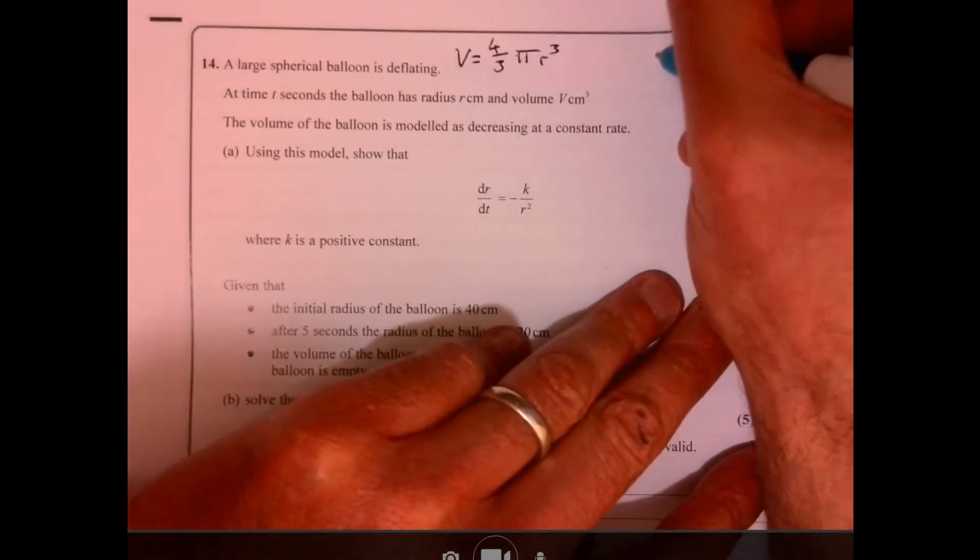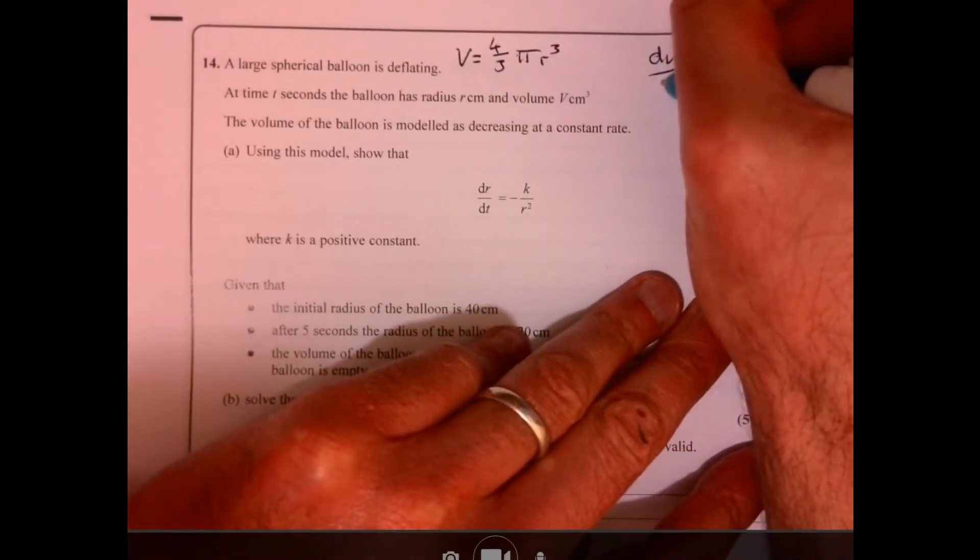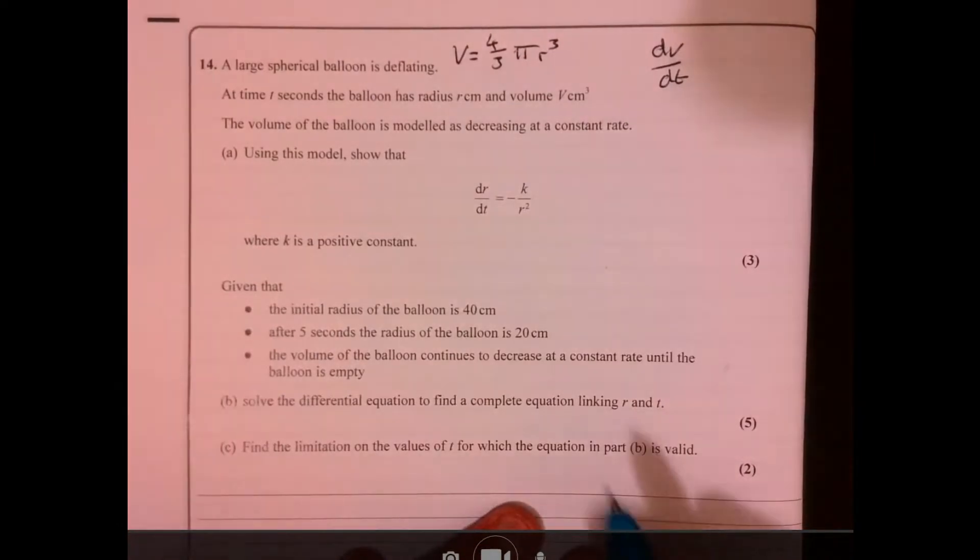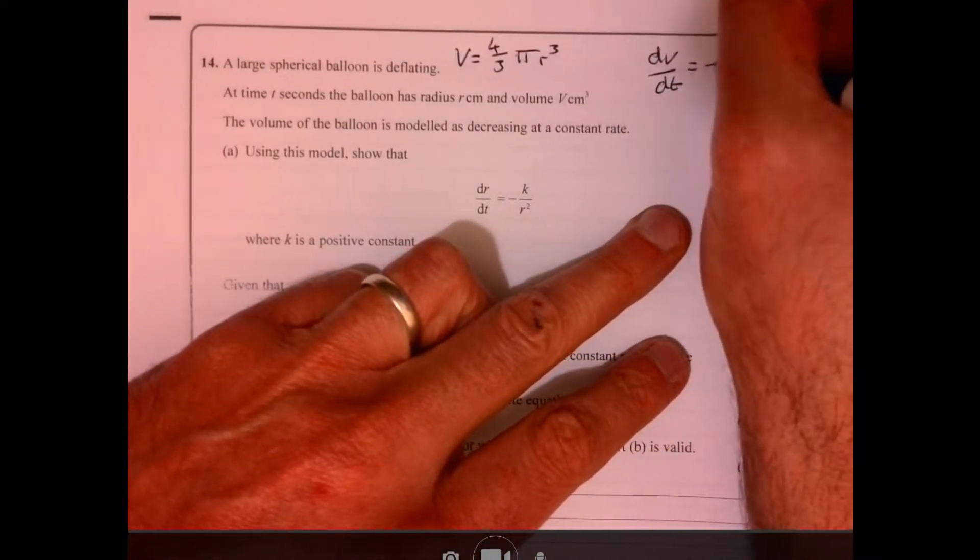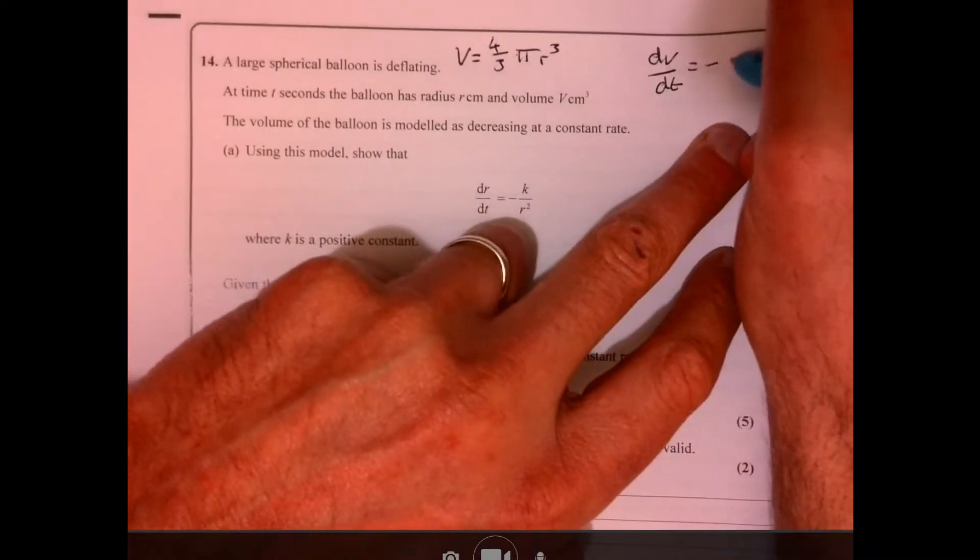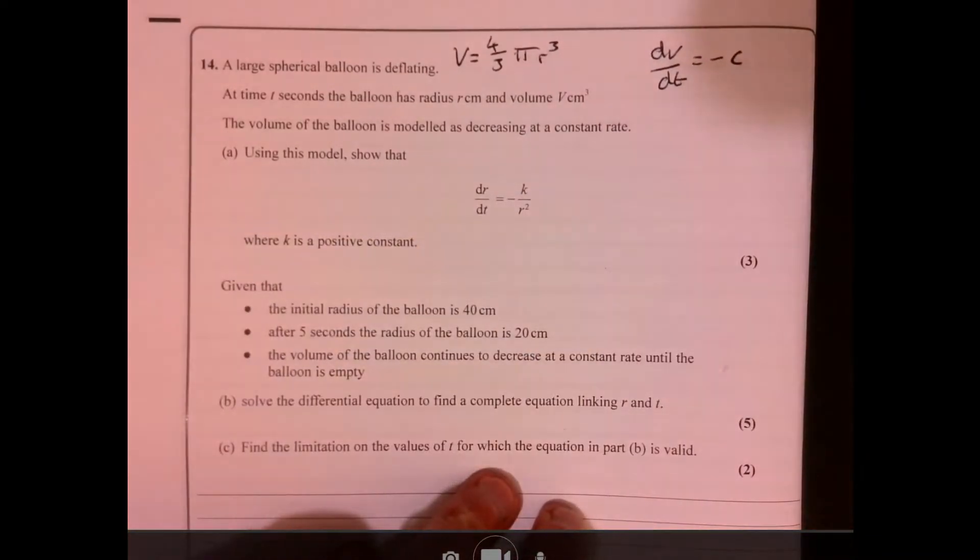So let's think about what we're told. We're told that the volume is changing over time and it's decreasing at a constant rate. So it's decreasing, so it's negative. Let's just call that constant rate C.